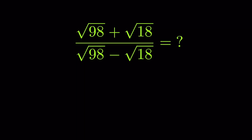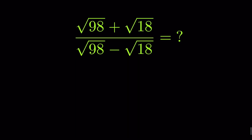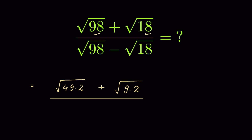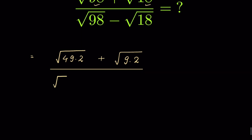We need to simplify (√98 + √18) / (√98 - √18). There are two methods we can use. In the first method, we simplify the radicals first. We write 98 as 49 × 2 and 18 as 9 × 2, giving us (√(49×2) + √(9×2)) / (√(49×2) − √(9×2)).